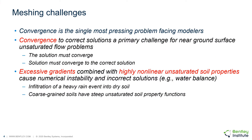An insufficient mesh can also lead to convergence problems. In particular, flow in unsaturated soils problems near the surface is highly nonlinear and can affect the solution accuracy. Excessive gradients near the ground surface combined with highly nonlinear unsaturated soil properties can cause numerical instability and incorrect solutions. Unfortunately, these types of scenarios are quite common — infiltration of a precipitation event into a dry soil can immediately create numerical instability, and this modeling scenario is quite common.